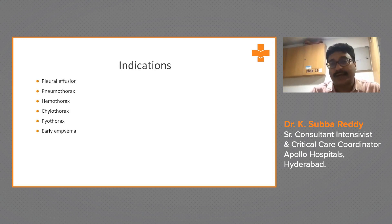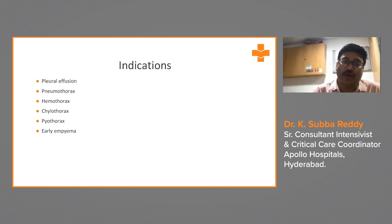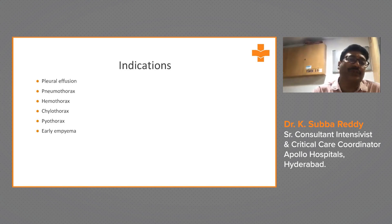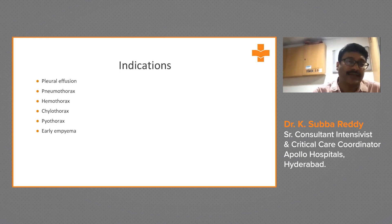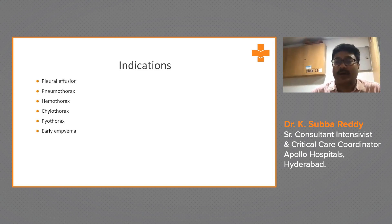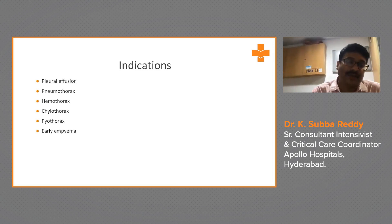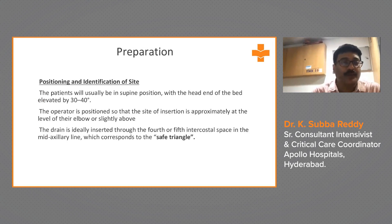The most common indications in the ICU are pleural effusion and pneumothorax. In trauma patients with hemothorax — a lot of blood in the pleural space — we insert an ICD. Chylothorax from injury to the thoracic duct, pyothorax, and early empyema are also indications. Empyema should be drained by ICD or a pigtail catheter, as antibiotics alone will not work without drainage.